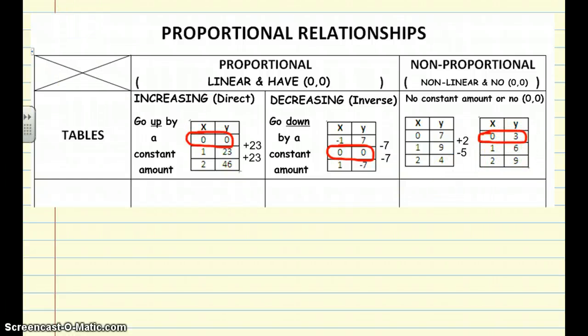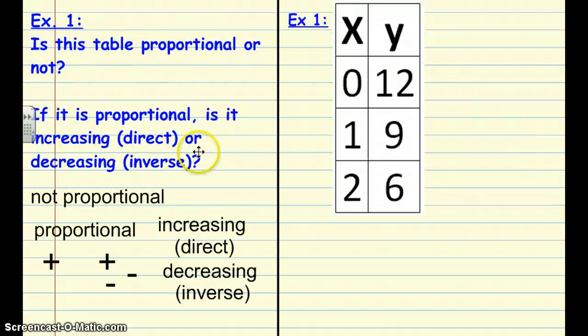So let's take a look at some examples. The directions or the question is the same for all three examples so you can just write it one time. And so the question is this: is this table proportional or not? If it is proportional, you have to decide if it's increasing or direct, or decreasing, considered inverse.